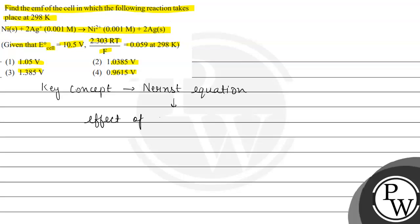It is the effect of concentration and temperature of the electrode potential, and the given reaction we can see is the nickel and silver reaction given.